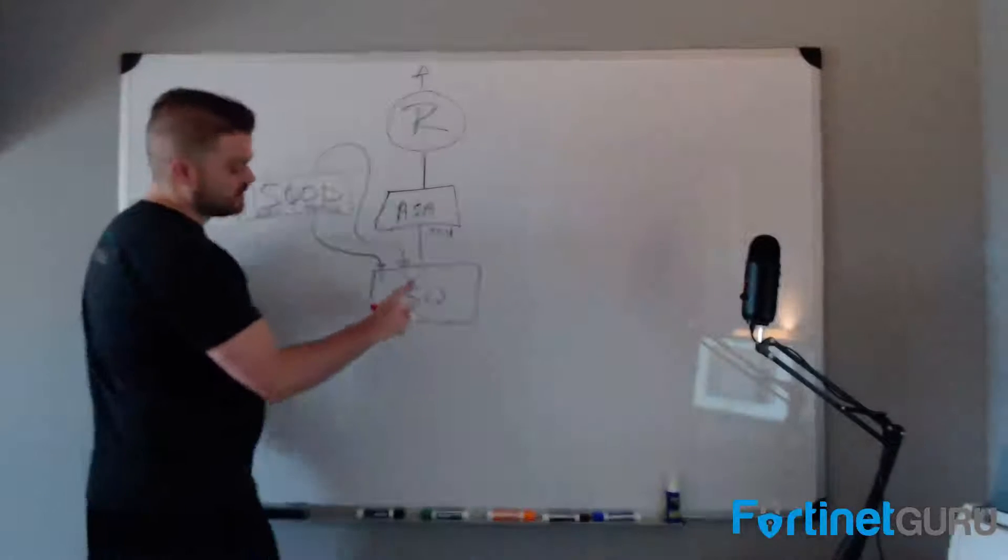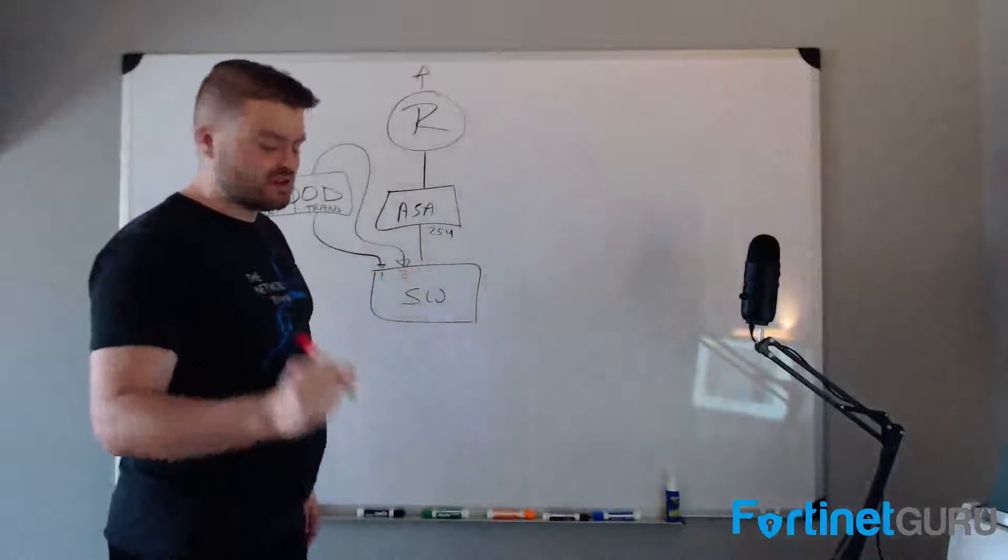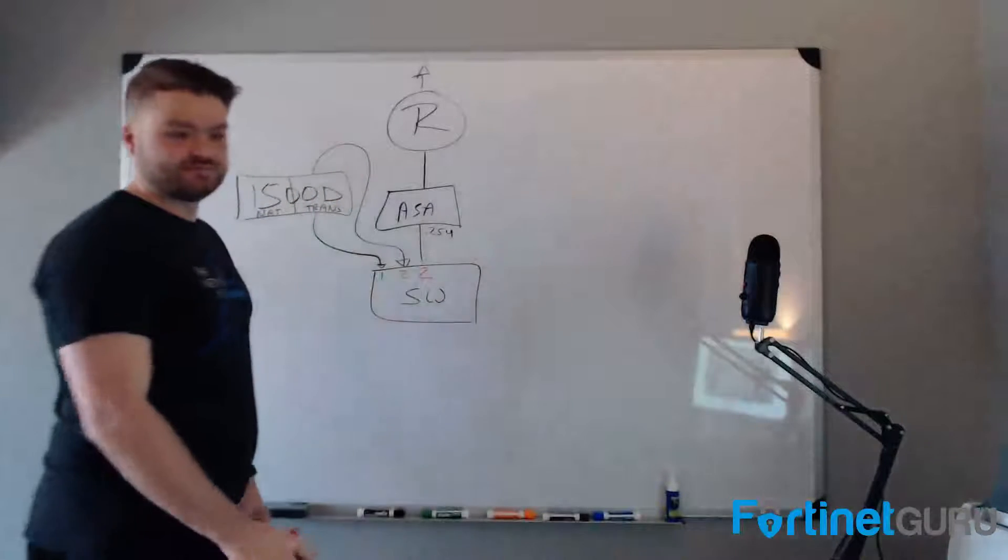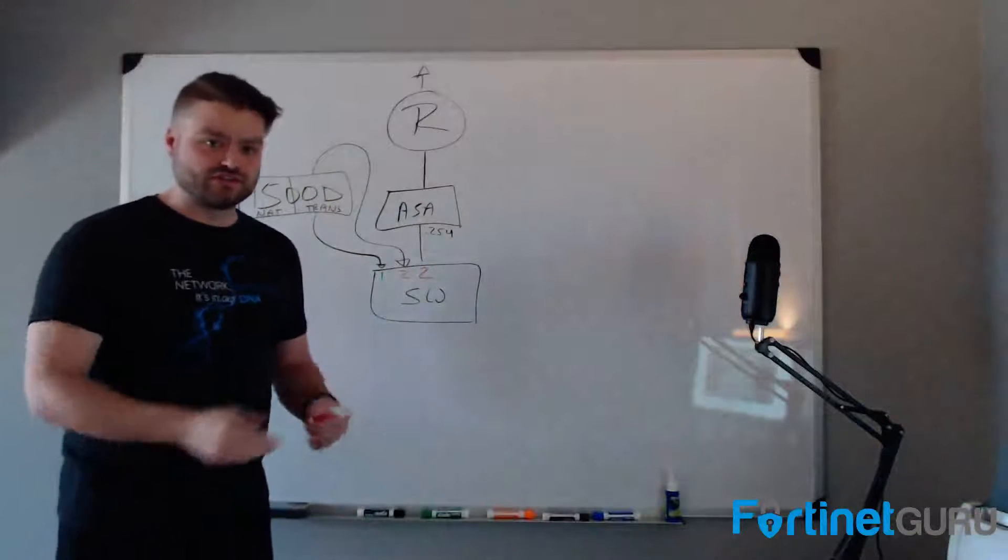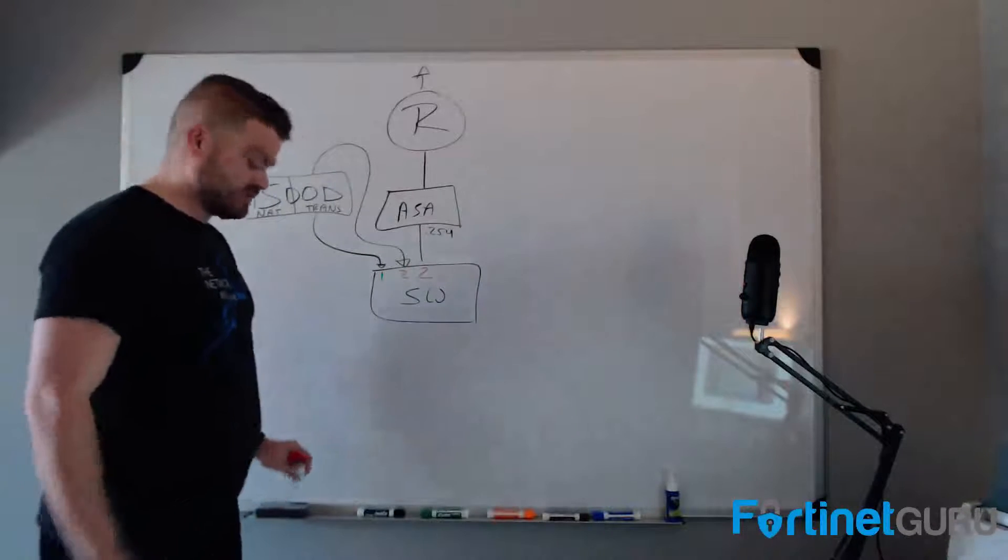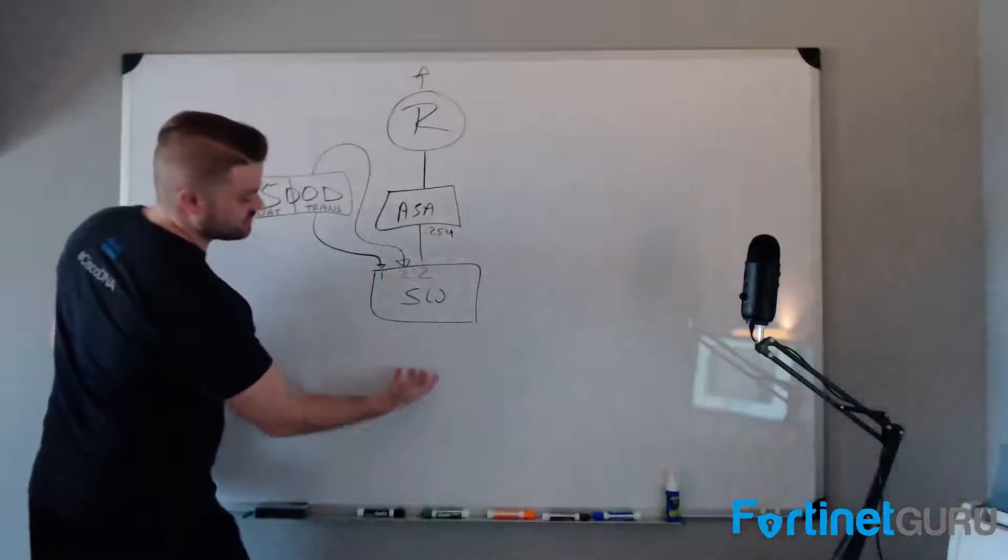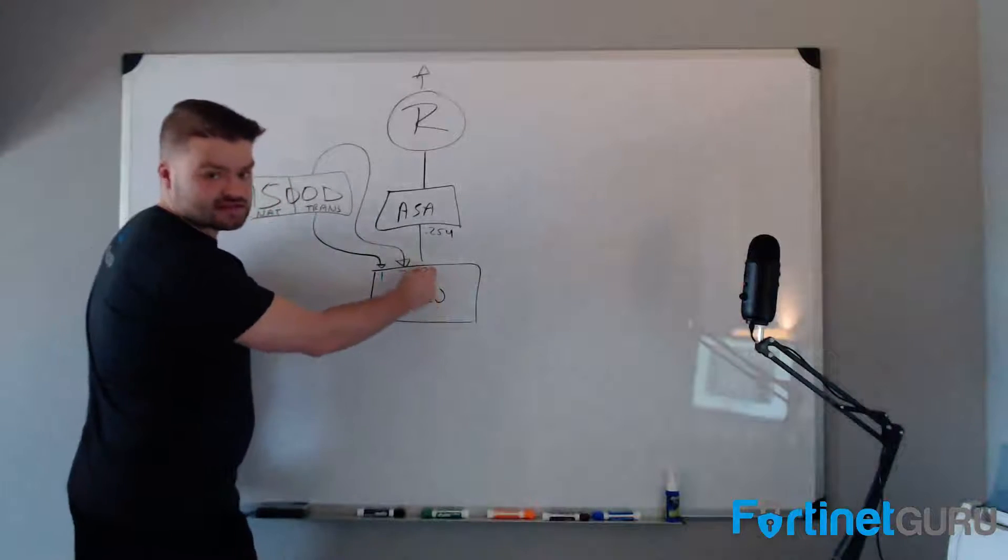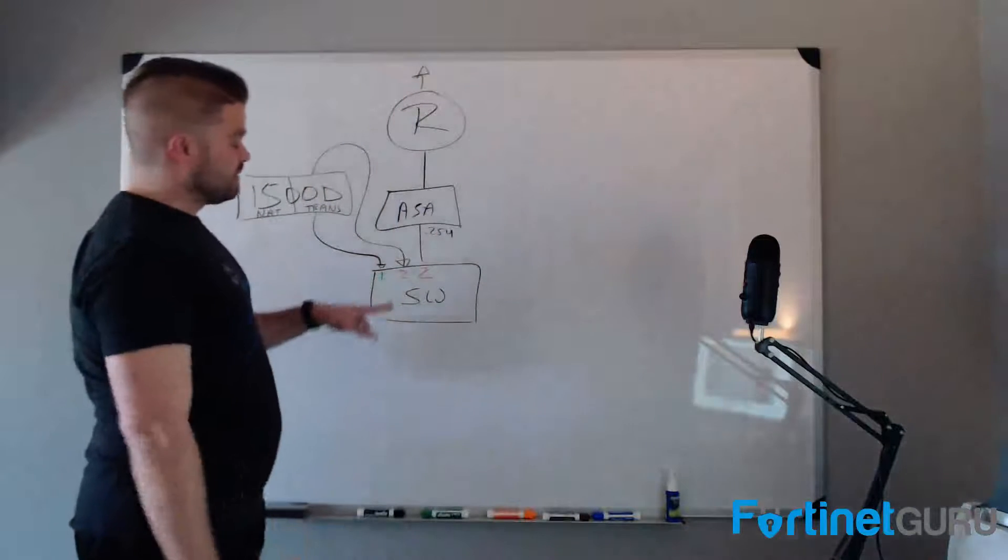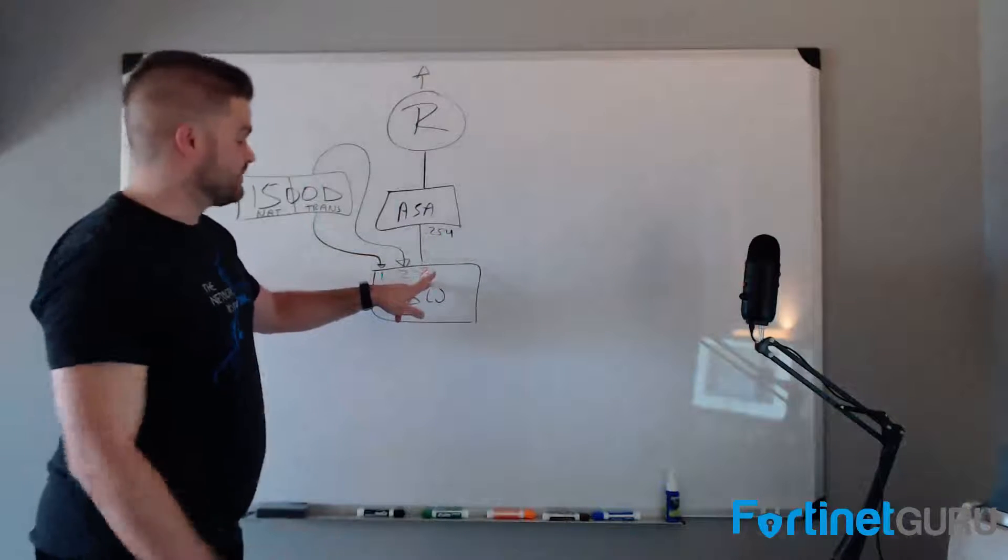We took the port that the ASA inside interface was originally connected to, and we changed it from a native VLAN of 1 to a native VLAN of 2. What's that do for traffic flow? So what that does for traffic flow is when it was VLAN 1, when it was on the original VLAN, traffic from the switch would come up and just go straight to the ASA. Go out to the internet, come back, etc.